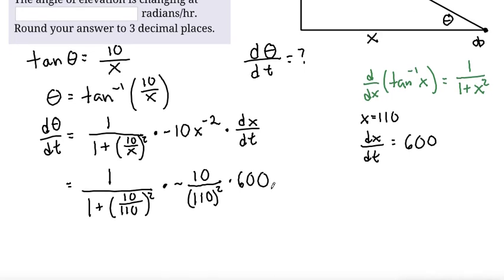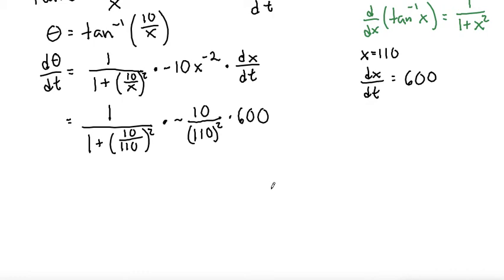And plugging that into my calculator, I get 1 divided by 1 plus 10 over 110 squared. So let me just get that number so far. This is equal to 0.991803.